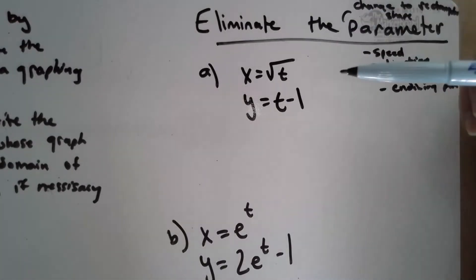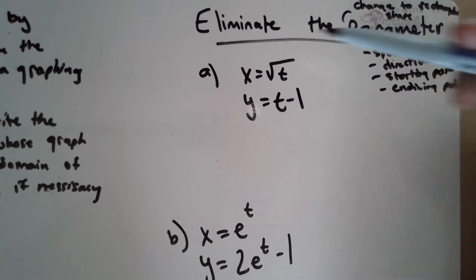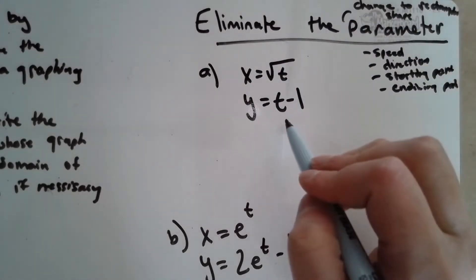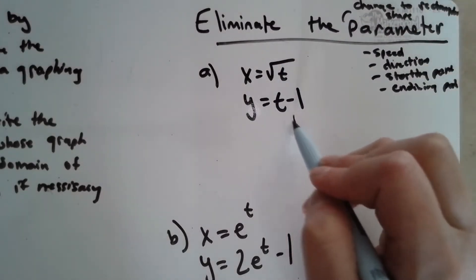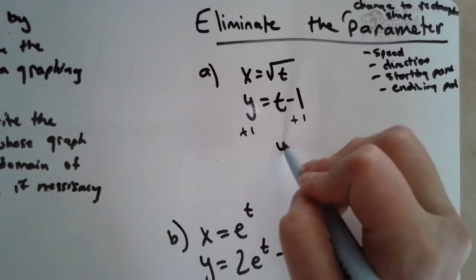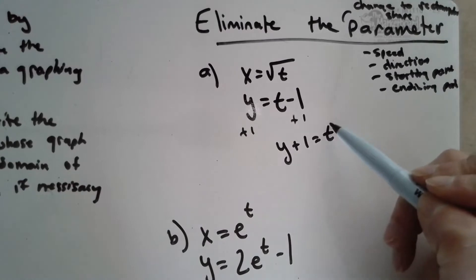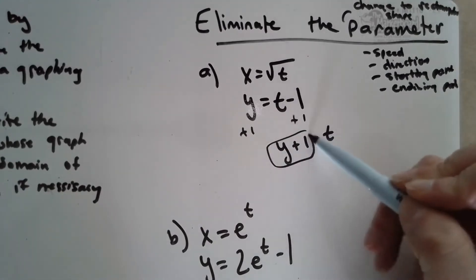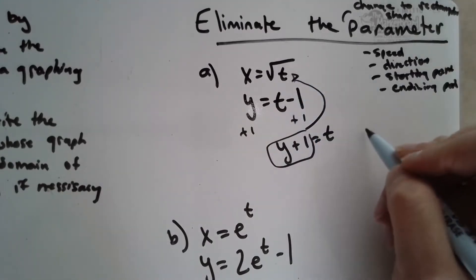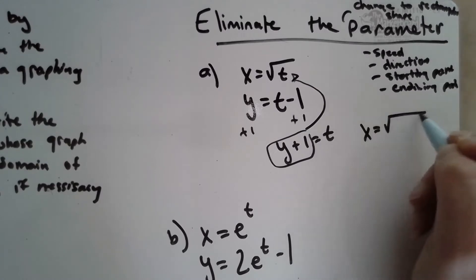Okay, so we're going to change this to something we're familiar with. And how we do this is we're actually going to solve for T and then substitute that into the other equation. So looking at this, I'm going to say okay, if I add 1, y plus 1 equals T. And then I could take what T equals and substitute in here. So x equals the square root of y plus 1. That technically would be our parametric form—that's our standard x-y graph.